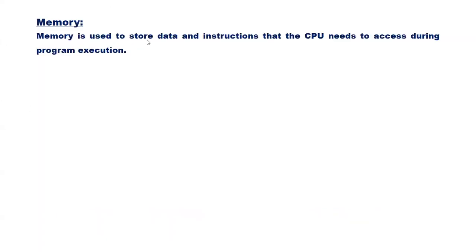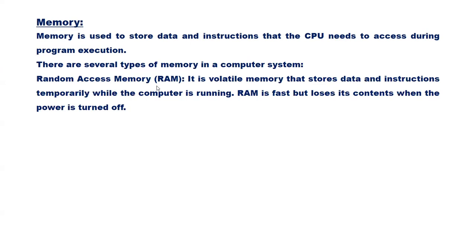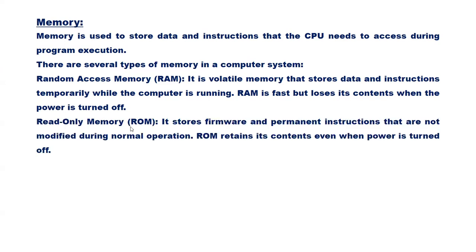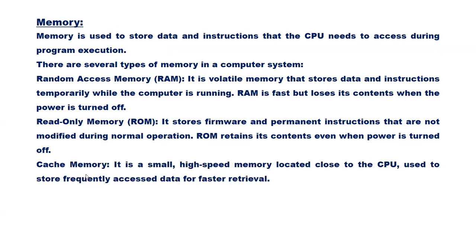Memory is used to store data and instructions that the CPU needs to access during program execution. RAM is volatile memory that stores data and instructions temporarily while the computer is running — it is fast but loses its content when power is turned off. ROM stores firmware and permanent instructions not modified during normal operation, retaining content even when powered off. Cache memory is a small, high-speed memory located close to the CPU, used to store frequently accessed data for faster retrieval.